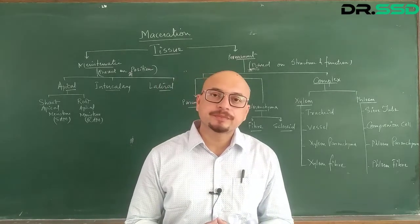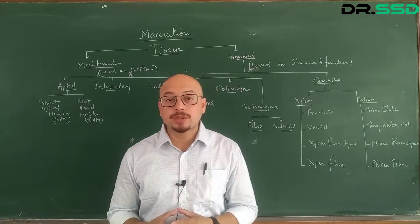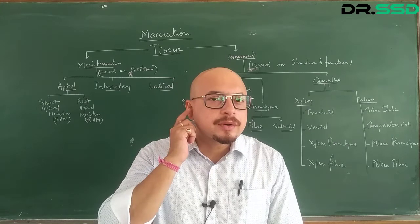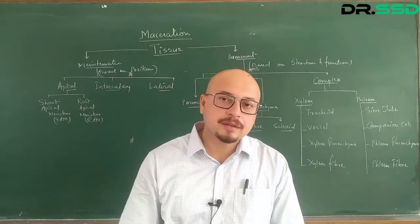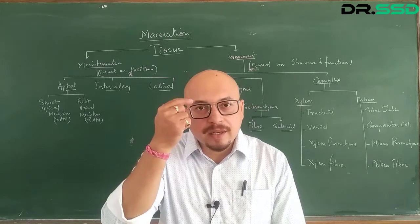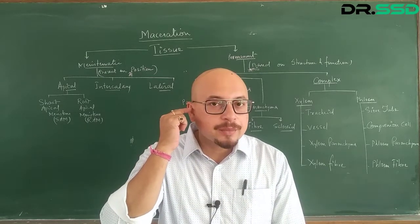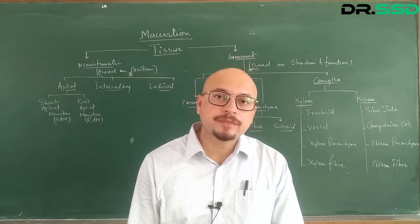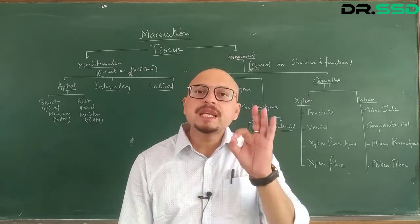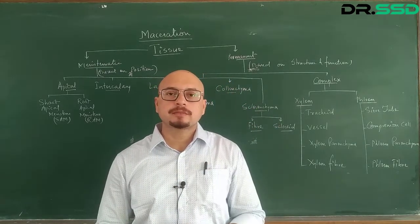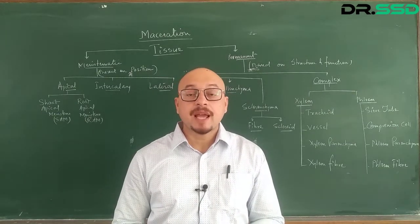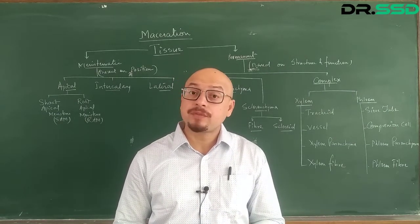For example, if I talk about my eardrum, it is meant for hearing. My retina — it is meant for vision. Now do you expect the retina to hear and the eardrum to see? It is not possible. So therefore, each and every tissue is unique, having a specialized function, and that is what is called division of labor.